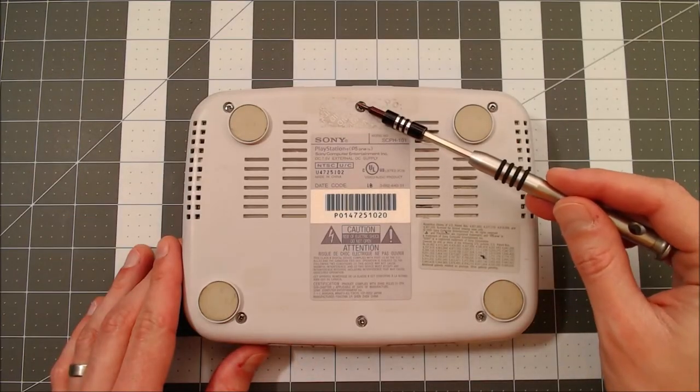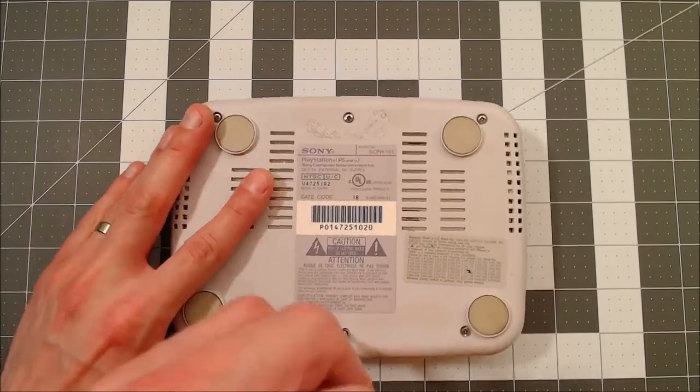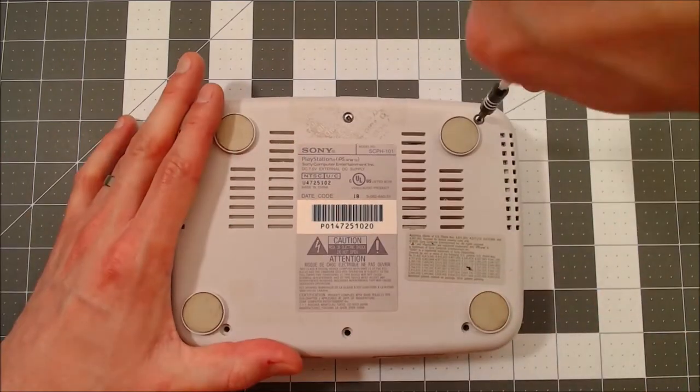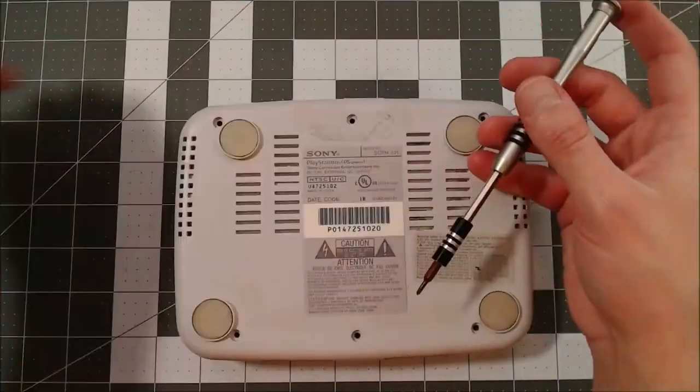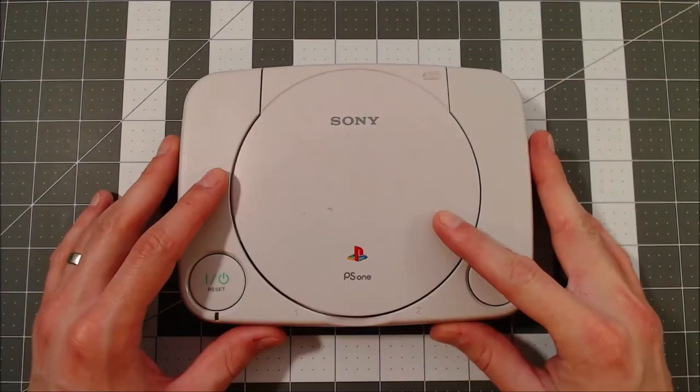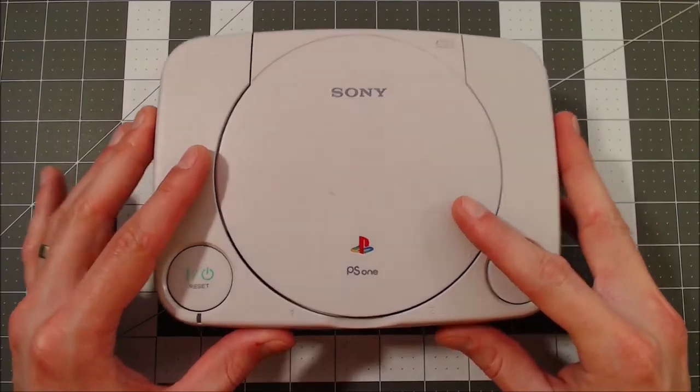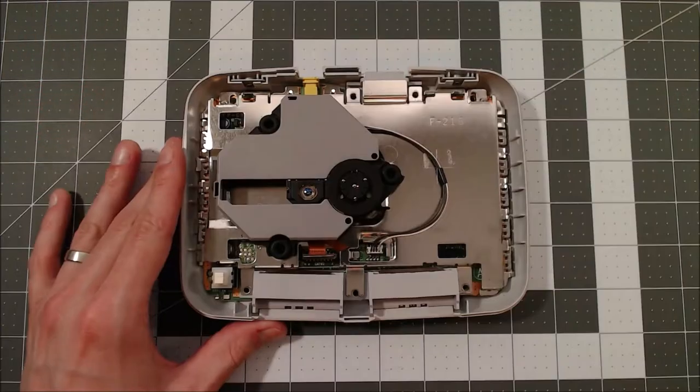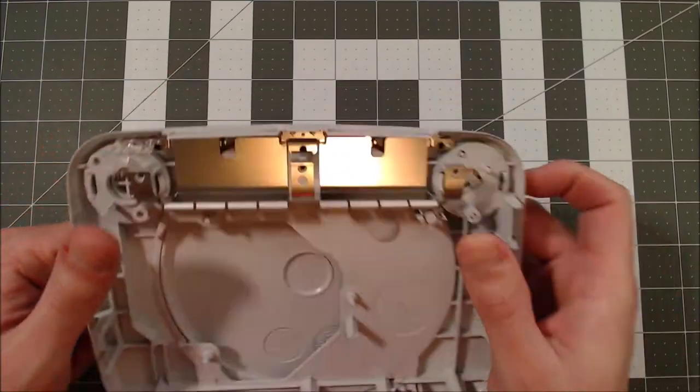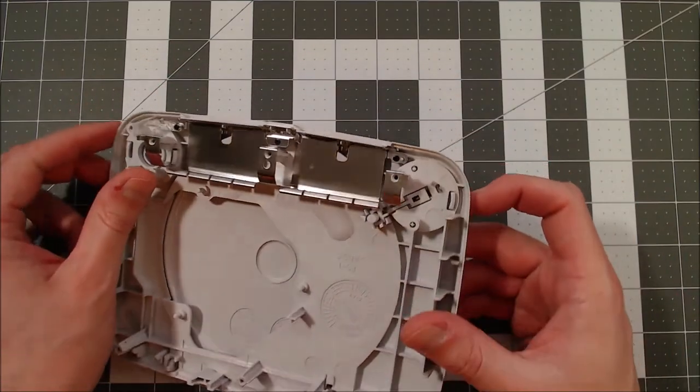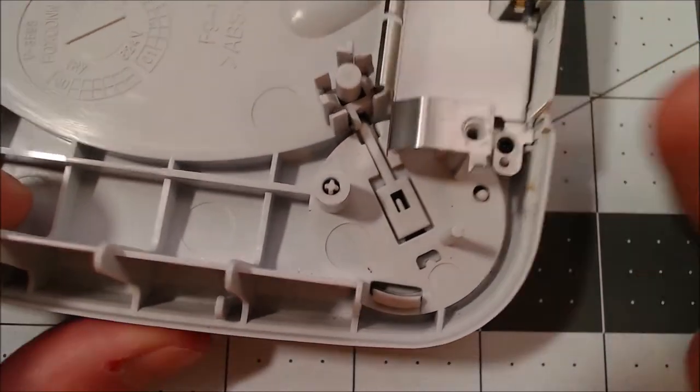Up here there will normally be a sticker that has already been removed on this unit. Now we can take the shell off. We don't need this because the button's right here, so let's focus there for a moment.